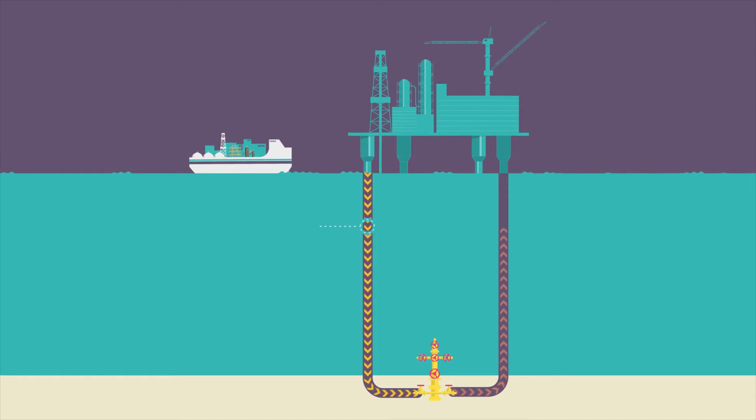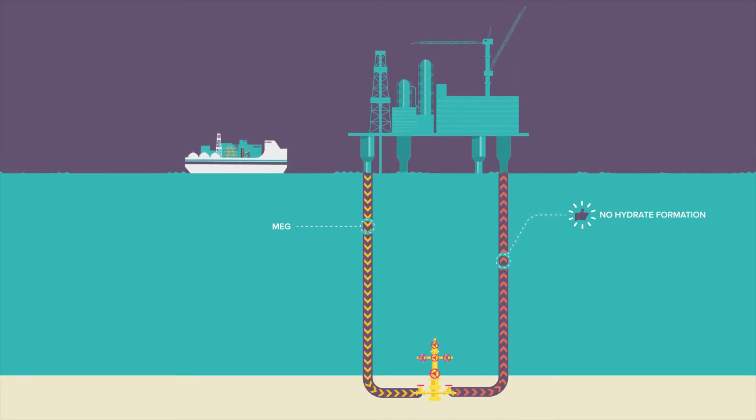Injection of monoethylene glycol, MEG, at the wellhead is an effective way to prevent hydrate formation and guarantee gas flow and continuous production.